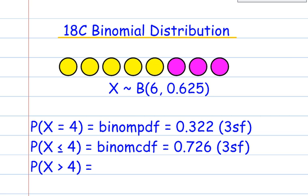So, one of the things I said was it had to be less than or equal to. So, what happens if we want more than 4? Well, if we want more than 4, then what we need to do is do 1 take away x being less than or equal to 4. And so, this will give you 0.274.